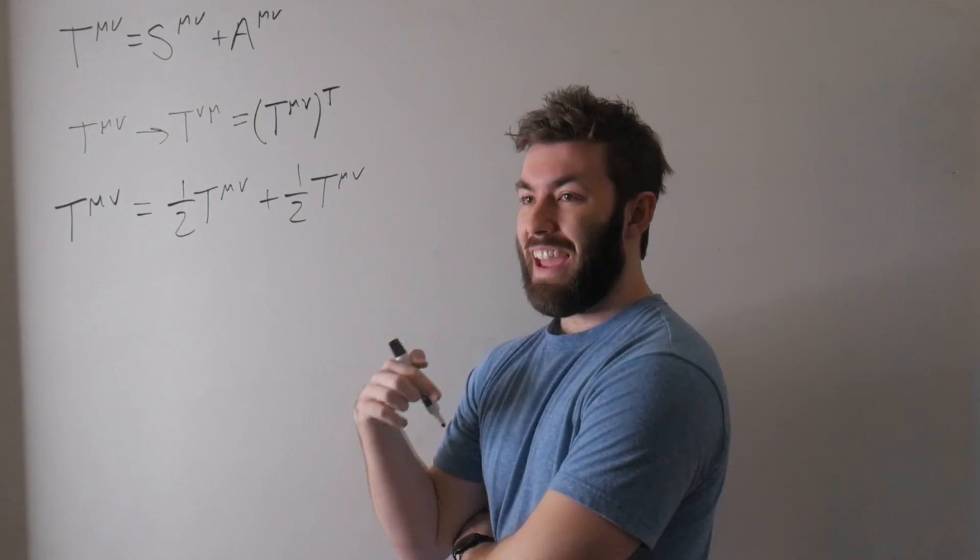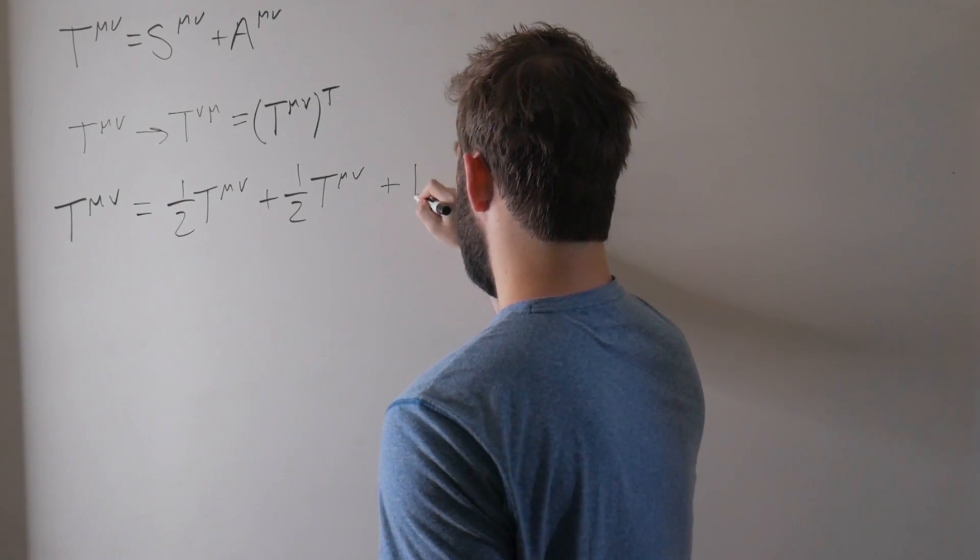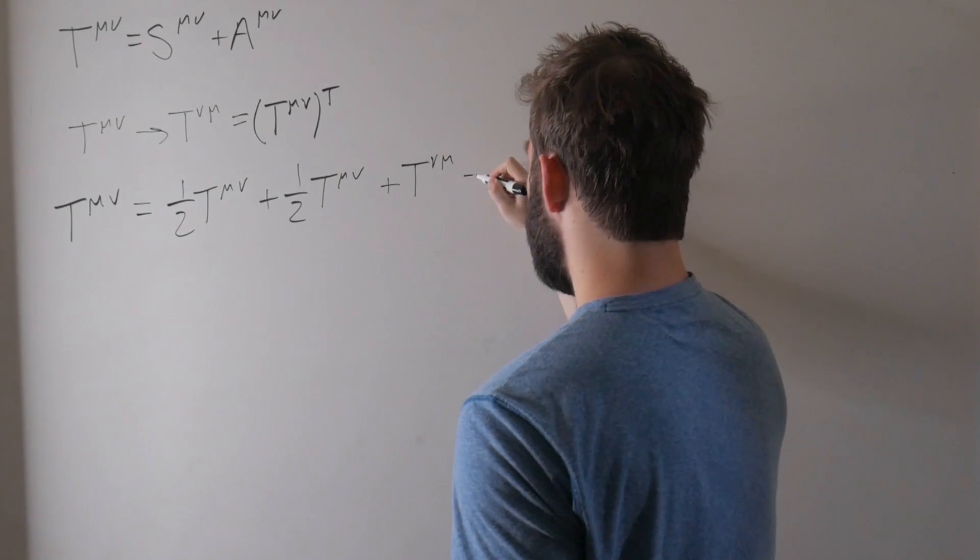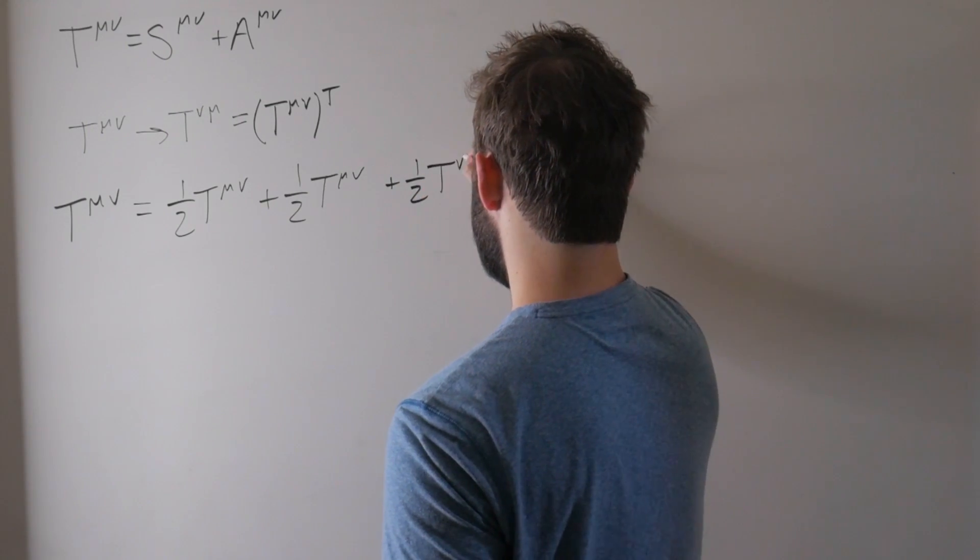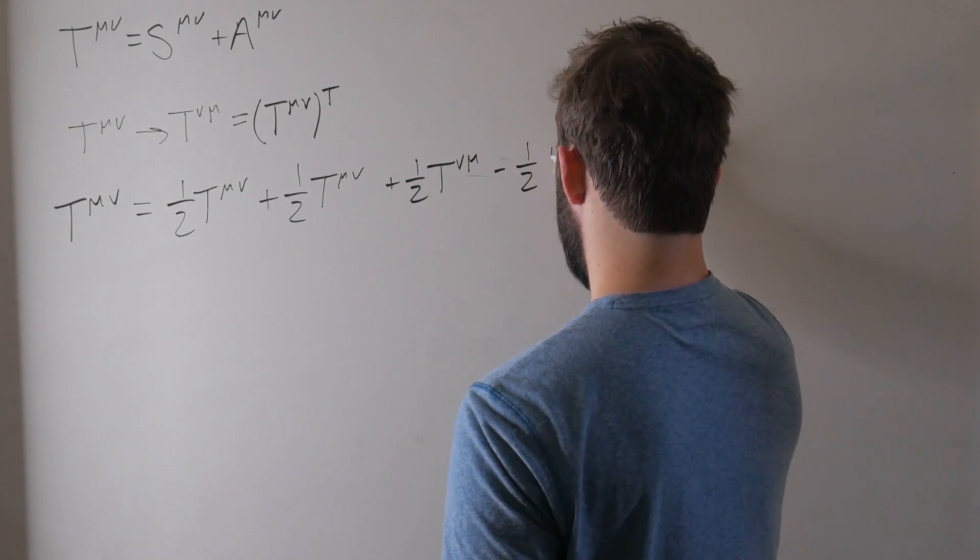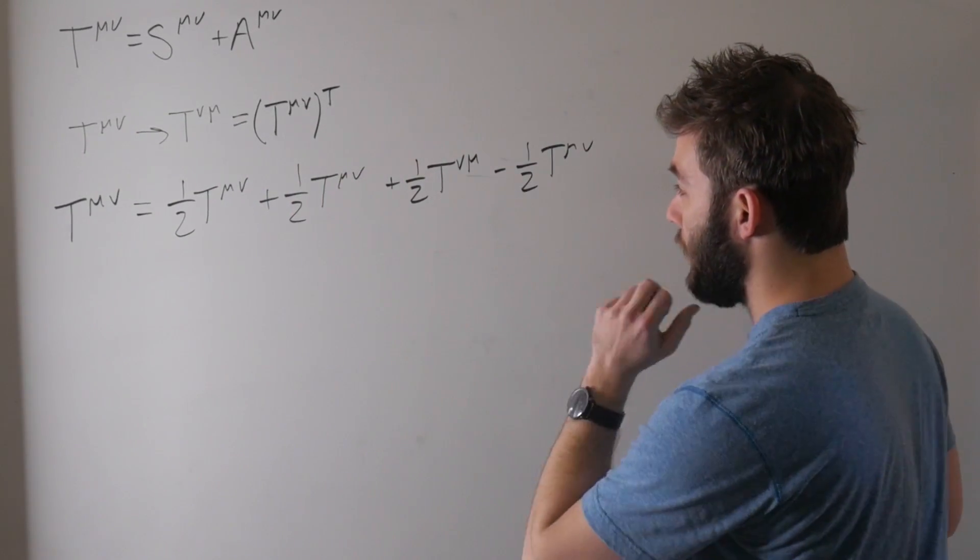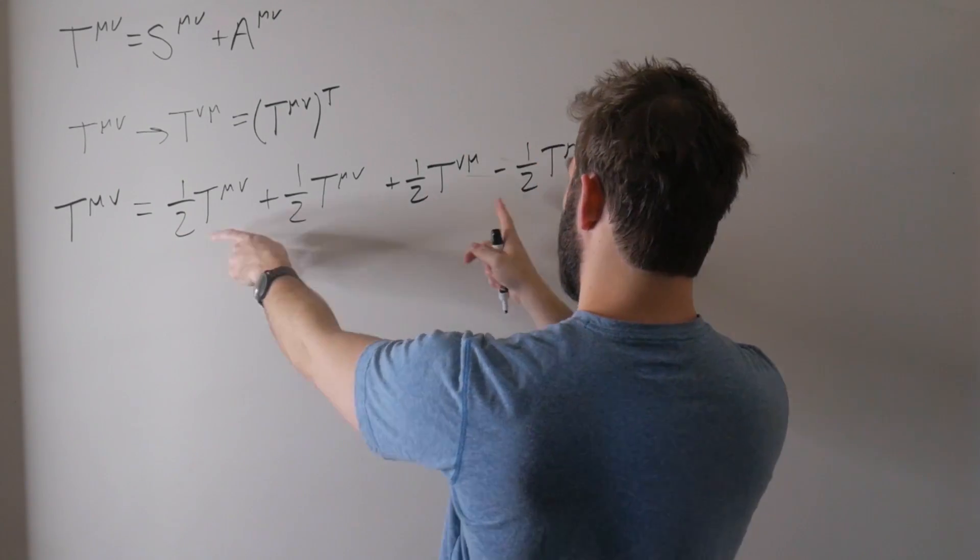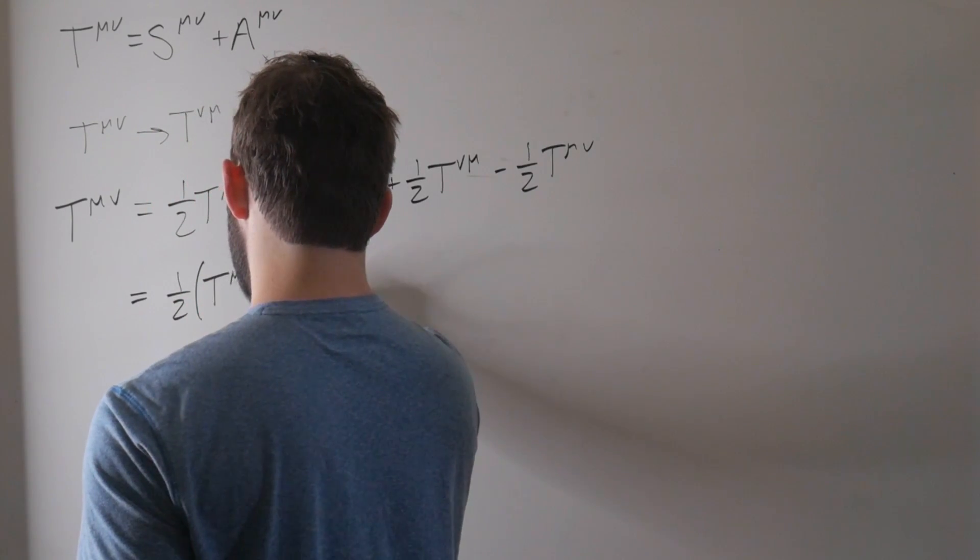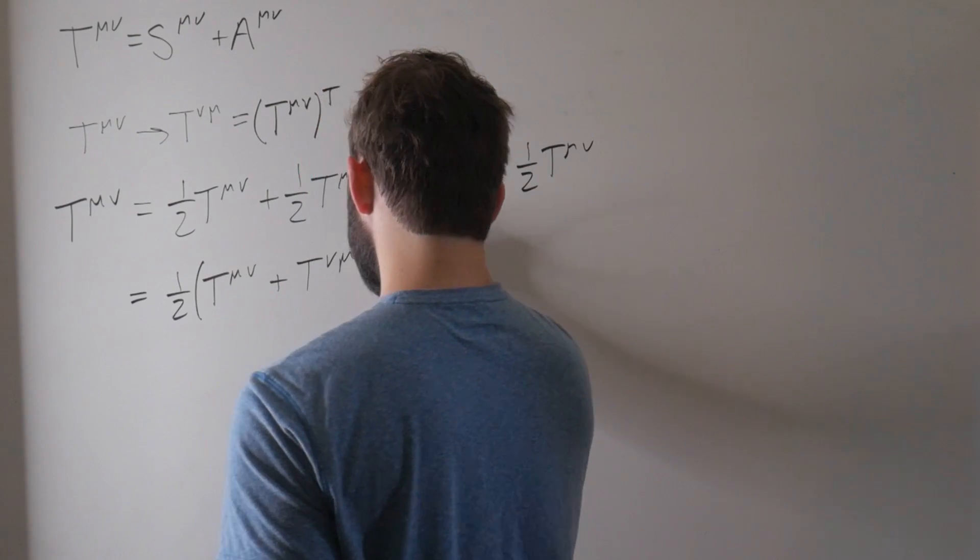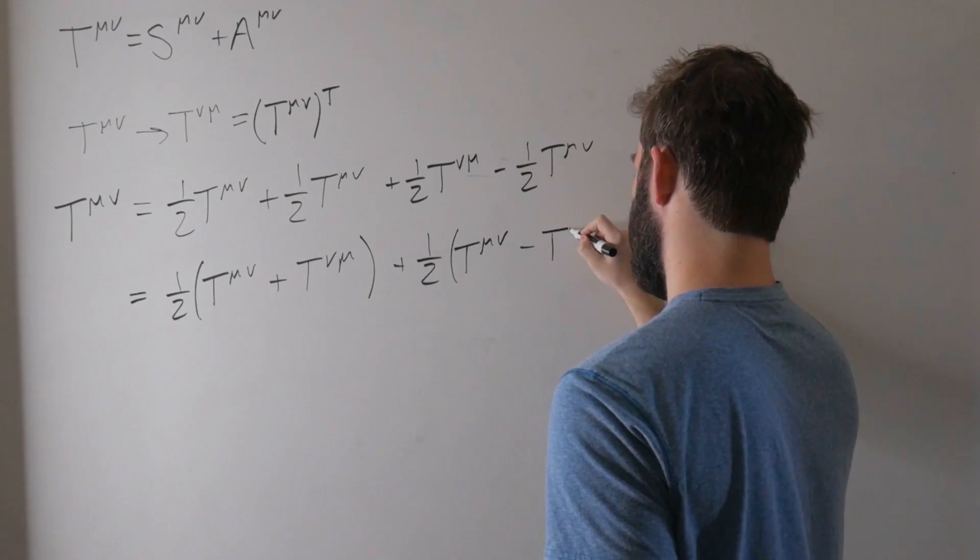And then what I also want to do is I want to add and subtract the transpose. So I want to say that this is also equal to this plus T^νμ minus, and let's actually throw one half on here as well. So plus one half T^νμ minus one half T^νμ. That way we get a factor of one half that we can factor out, which will be nice. And the positive terms and the positive terms. So I want to collect these together and collect these together. So this is equal to one half T^μν plus T^νμ plus one half T^μν minus T^νμ.